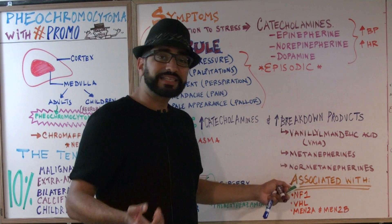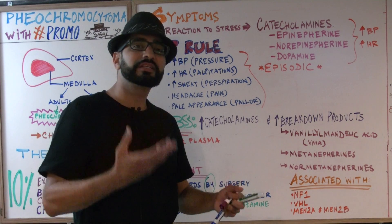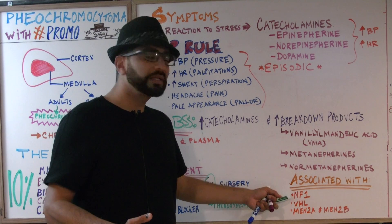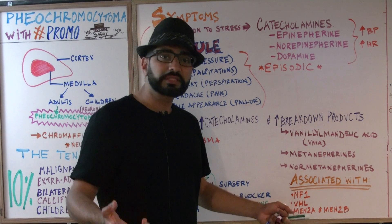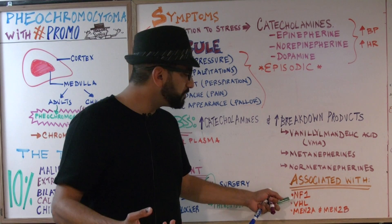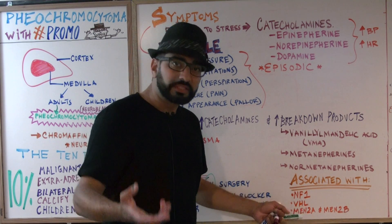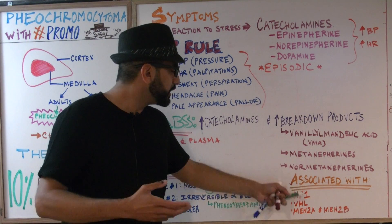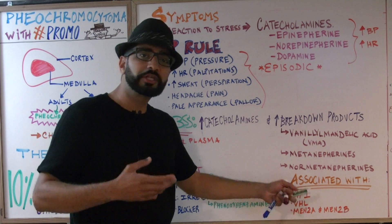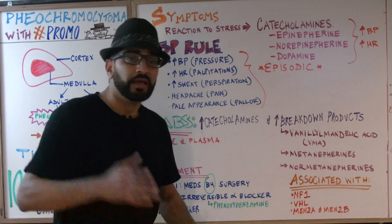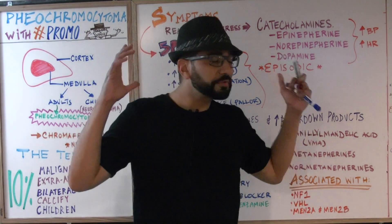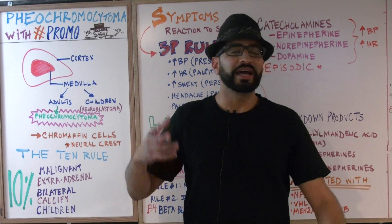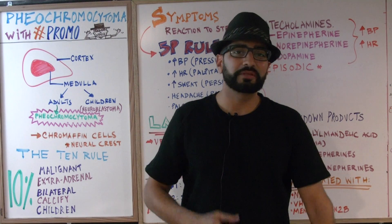Keep that in mind. Lastly, what is pheochromocytoma associated with? It's associated with many other conditions. The first one is NF1, which stands for neurofibromatosis type 1. The second one is VHL, which stands for Von Hippel-Lindau disease. And the third one, which we will cover in a few lectures, is called multiple endocrine neoplasias type 2A and type 2B. That's it — lots of information, but it's easy information. You definitely need to understand pheochromocytoma to get all the marks on the USMLE regarding this topic.